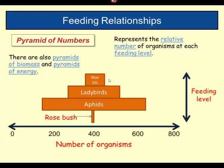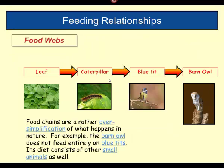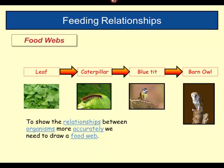This is all a little bit simplistic. Food chains are rather an oversimplification of what happens in nature. Our barn owl does not just eat blue tits — it has a varied diet. It consists of other small animals as well, such as mice and shrews. To show relationships between organisms more accurately, we need to draw not a food chain but a food web. A food web shows a more extensive view of these relationships.